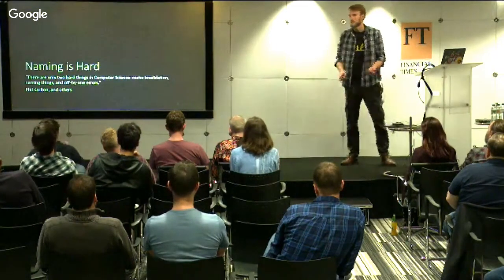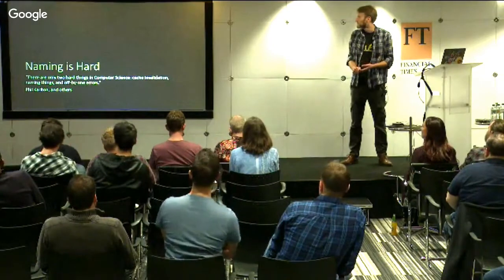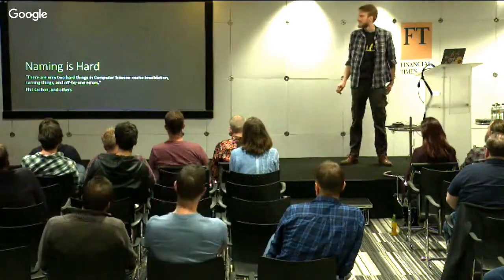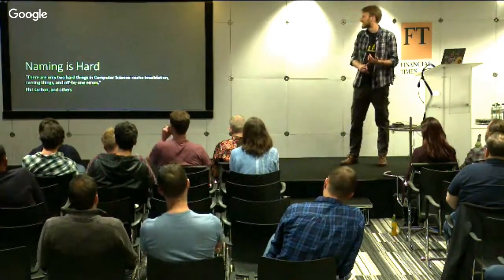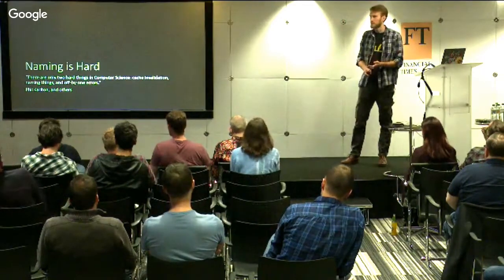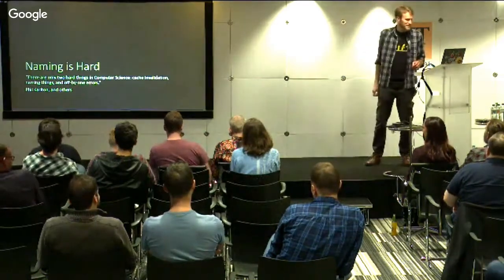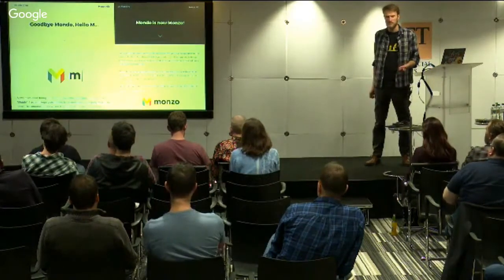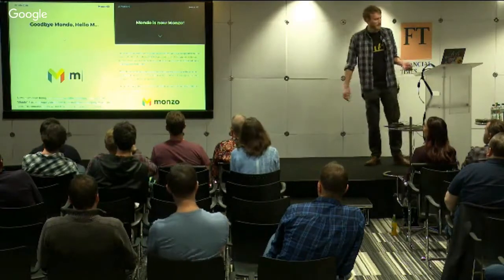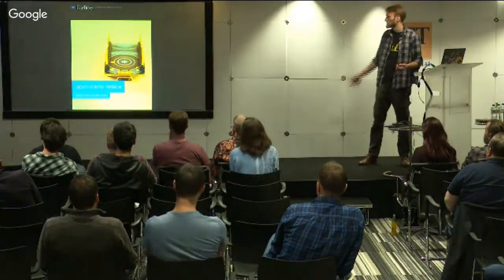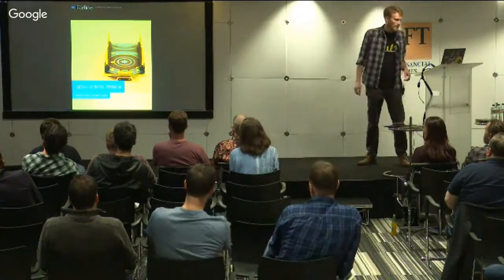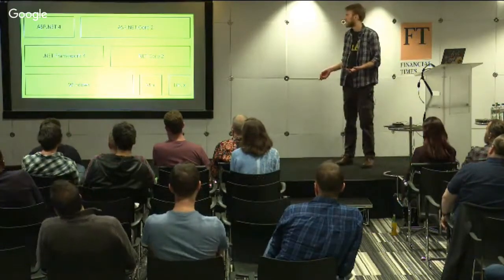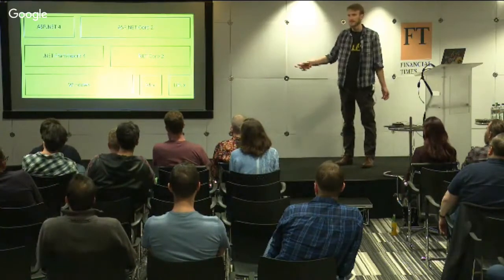Naming is hard. There's a famous quote: there are only two hard things in computer science — cache invalidation, naming things, and off-by-one errors. Here are a few examples: Monzo had to change their name because someone else had it; a piece of IoT hardware had to change their name too. ASP.NET is a brand, so Microsoft stuck with it. It was originally called ASP.NET 5, then rebranded to ASP.NET Core.